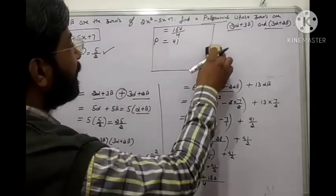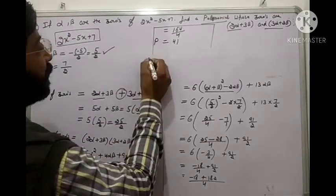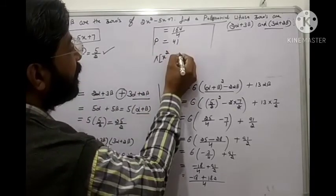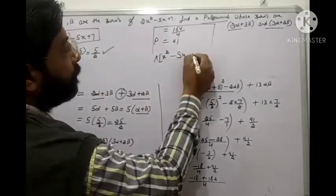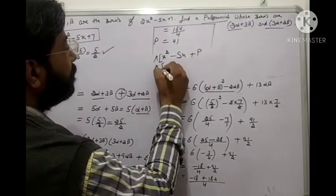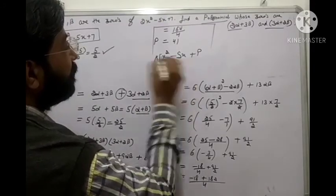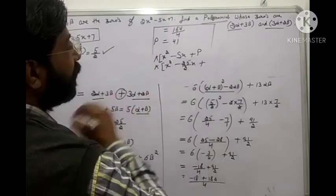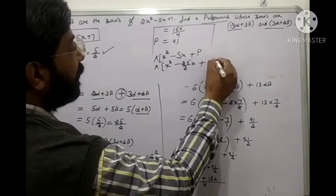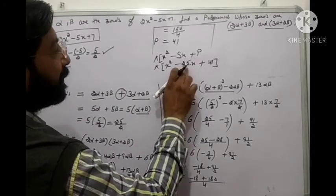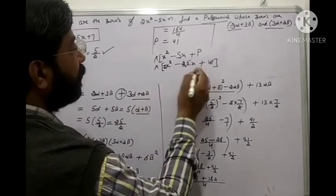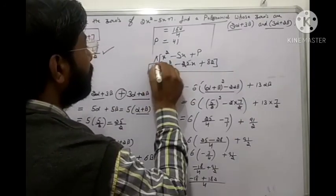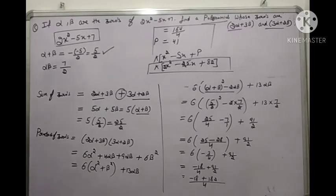Now sum is 25 upon 2 and product is 41. The polynomial is k times x squared minus sum of zeros times x plus product of zeros. So it is k times x squared minus 25 upon 2 times x plus 41. Taking LCM 2, the polynomial becomes 2x squared minus 25x plus 82.